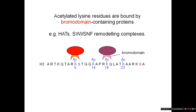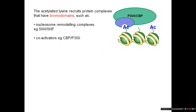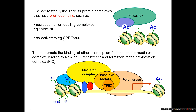When a lysine has been acetylated, it recruits proteins that specifically contain something called a bromodomain. The sorts of proteins that have bromodomains include more HATs — providing a positive feedback — and also remodelling complexes like the SWI/SNF remodelling complex. Once the acetyl lysine has recruited a bromodomain-containing protein, these tend to be co-activators that promote the binding of other transcription factors and the mediator complex, stabilising the recruitment of RNA polymerase II and the formation of the pre-initiation complex, ultimately promoting the initiation of transcription.